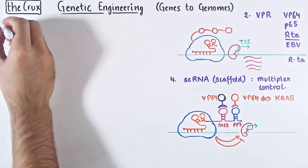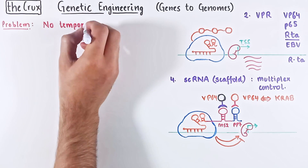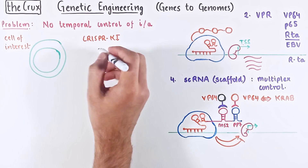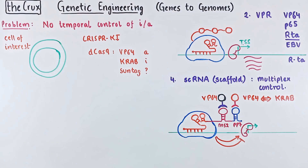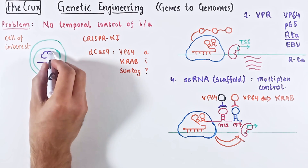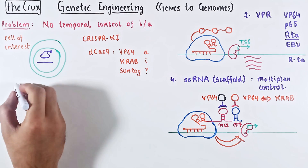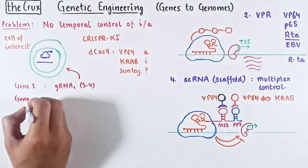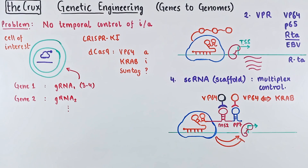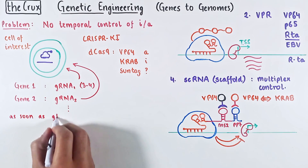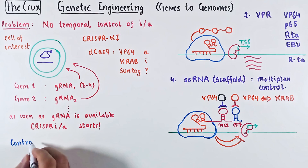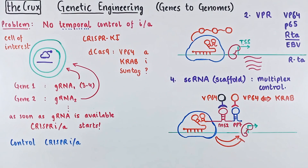There is an issue with all the CRISPR-A and CRISPR-I methods discussed so far: we do not control their start. Practically, you take your cells of interest, perform a knock-in of the dCas9 fusion effector, and this gives you a cell line expressing the dCas9 effector protein. As soon as the guide RNA is available, the CRISPR-I or CRISPR-A becomes active. So how can we time the control of this system? Perhaps by using an inducer — this led to a third iteration in dCas9 tools.